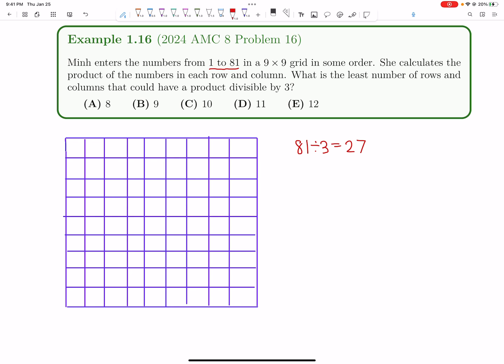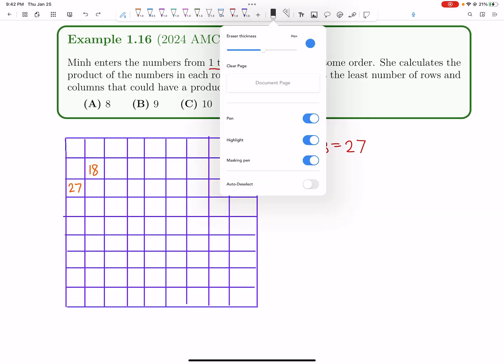And if you want to minimize the number of rows or columns that could have a product divisible by 3, what should we do? The idea is we have a number that's a multiple of 3 in a row. Let's just say we put 27 here. Now, this row is anyways going to be one of the rows, or one of the columns. And if we're trying to minimize the total number of columns, then maybe we should also put some more multiples of 3 in this same row. Because then, rather than occupying two separate columns, we can just combine them into one column.